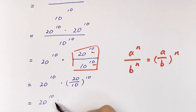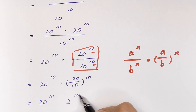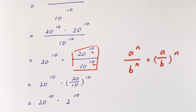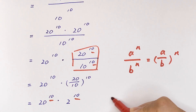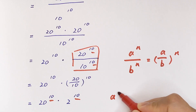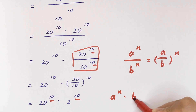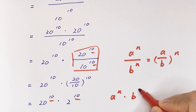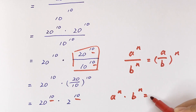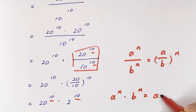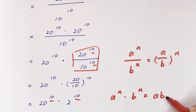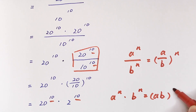So it will be equal to 20 to the power of 10 times 2 to the power of 10. Here we have a multiplication of terms with the same exponent, so we apply the rule: a to the power of m times b to the power of m is equal to a times b, in brackets, to the power of m.